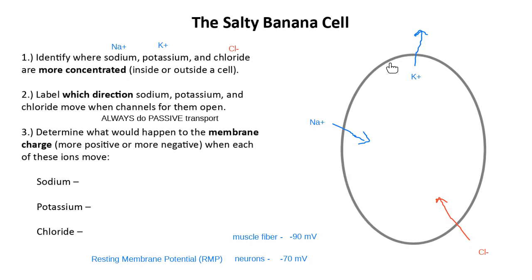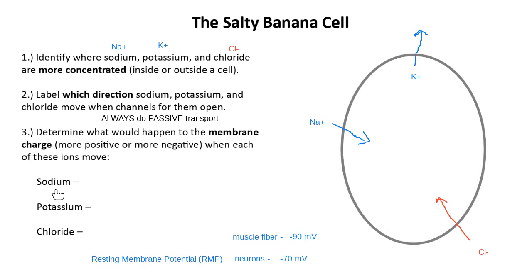Let's imagine that on my salty banana cell, the resting membrane potential is negative 70. That means the inside has 70 more negatives than outside. If I open up a channel for sodium, sodium comes inside the cell and brings its positive charge with it. So what effect does that have on membrane charge when sodium comes in?